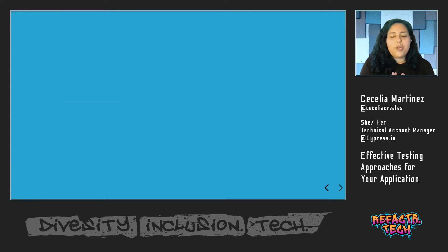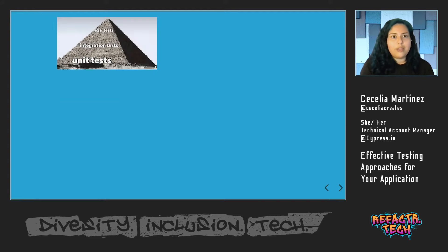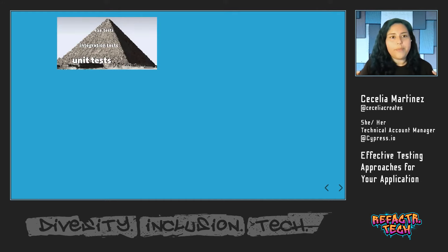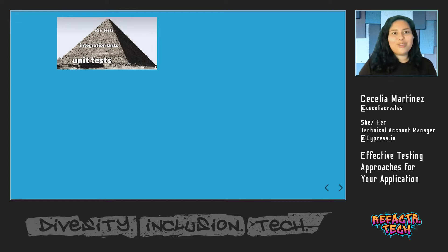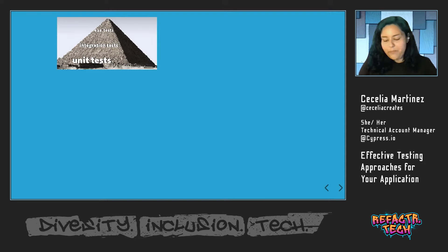There are a lot of different approaches to testing that you may have seen. The traditional one is the testing pyramid — unit tests on the bottom because they're the easiest and quickest to write so you should have a lot of those, then integration tests going up, and then end-to-end tests on the very top because those are the hardest to write and you shouldn't need as many of them.